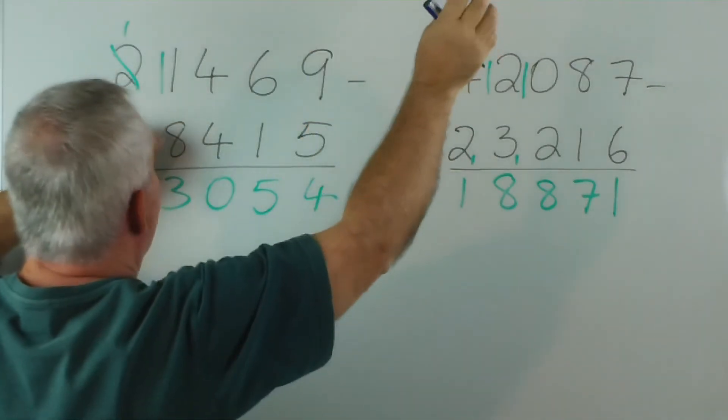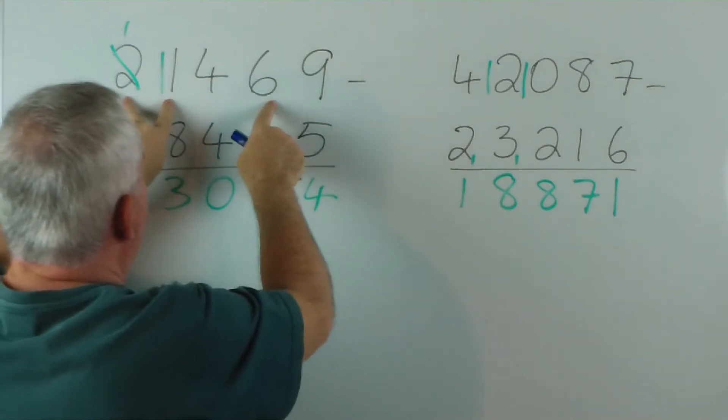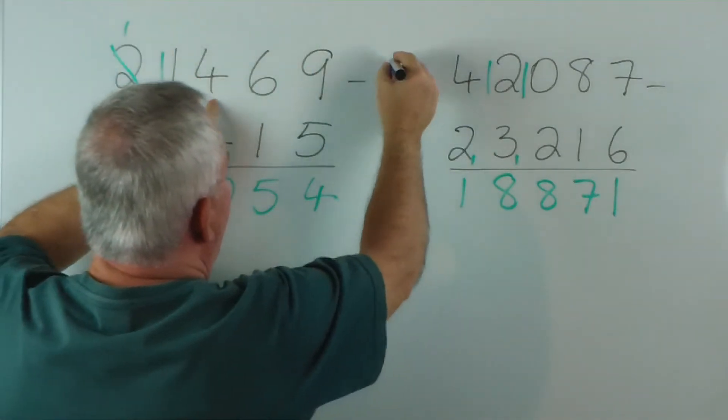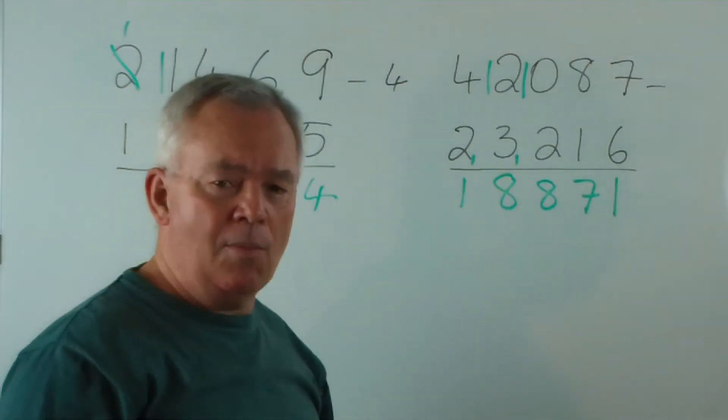So this is worth 9, out it goes. 2 plus 1 plus 6 makes 9, out they go, so that leaves a 4. This number, if you divide it by 9, has a remainder of 4.